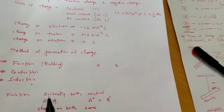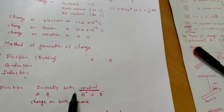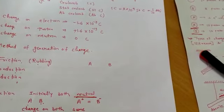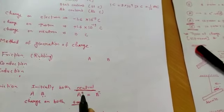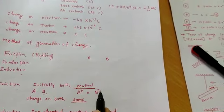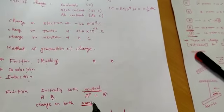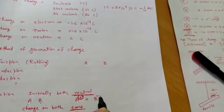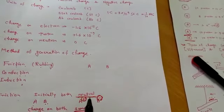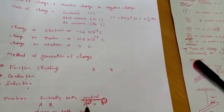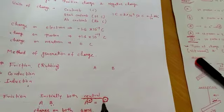The property of friction charging is: initially both bodies are neutral. After charging, both bodies have the same amount of charge — if one has plus 1, the other has minus 1; plus 2 then minus 2; plus 3 then minus 3. So the amount is the same but the polarity is opposite.